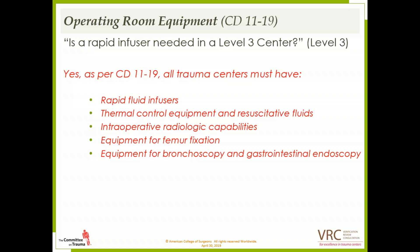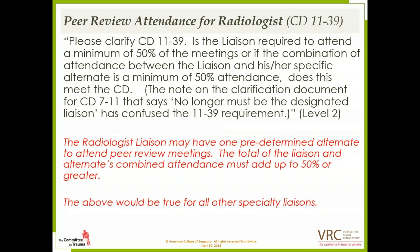On peer review attendance for the radiologist, CD 11-39: is the liaison required to attend a minimum of 50% of the meetings, or does the combination of liaison and alternate attendance meet the CD? The radiologist liaison may have one predetermined alternate — one is the operative word; it cannot be a different person each time. The total of the liaison and alternate combined attendance must add up to 50% or greater. This would be true for all other specialty liaisons such as neuro, ortho, etc. They can all have one predetermined alternate.